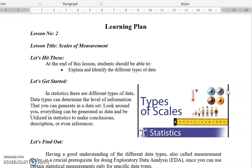As previously discussed, statistics utilizes data. Data are then analyzed in order to make inferences or results, discuss those results and what they mean. Now in statistics, there are different types of data. Data types can determine the level of information that you can generate in a data set. Everything that you can look around you is in form of data.